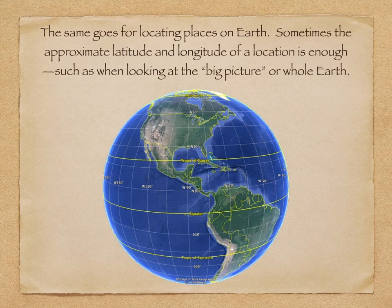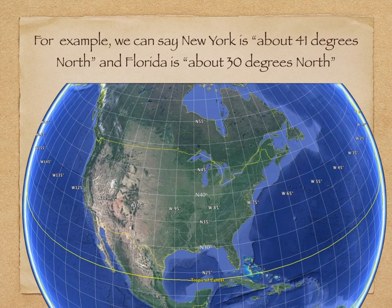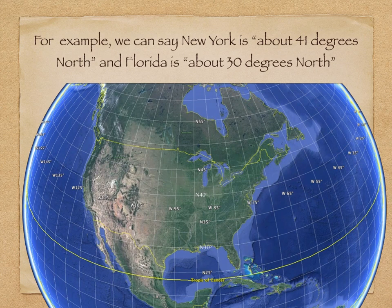So the same goes for locating places on earth. Sometimes the approximate latitude and longitude of a location is enough, like when we look at the big picture or the whole earth. For example, New York is about 41 degrees north latitude — you can see the 40 degree line vibrate there. Above that is the location of Long Island and the rest of New York, approximately. And then northern Florida down there is approximately 30 degrees north latitude. So in this case, we're doing big picture and a general sense of where the latitudes are.